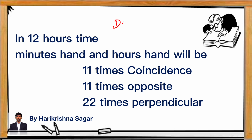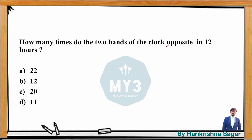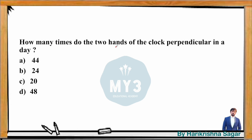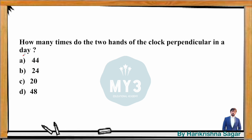If you know the divisibility rule for 11 — the difference of alternating digit sums equals 0 or a multiple of 11 — you can quickly identify the correct answer. For example, how many times are the hands opposite in 12 hours? The answer is 11 times (option D). For perpendicular in a day (24 hours): 22 × 2 = 44 times (option A). Only 44 is a multiple of 11 among the choices.